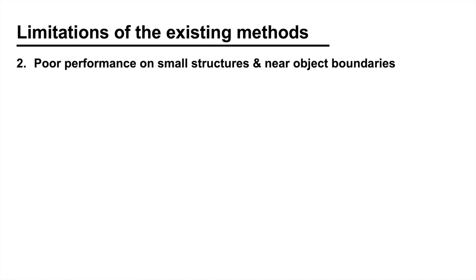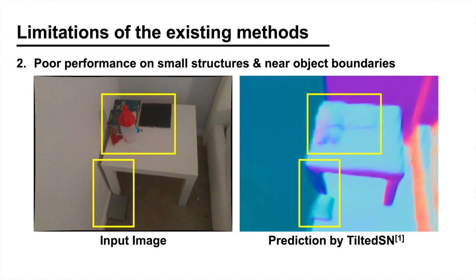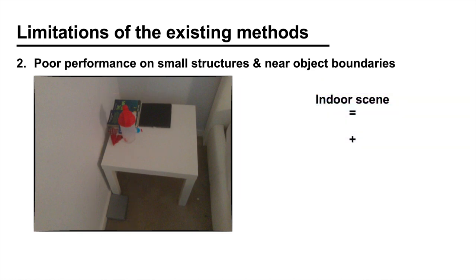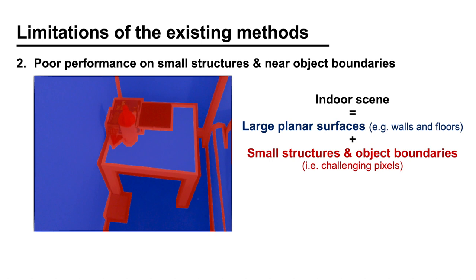Another limitation shared by the existing methods is the lack of detail in the prediction. When you look at a prediction made by a state-of-the-art method, you can see that the network fails to reconstruct small objects and that the object boundaries are not clear. This is mainly because there is a bias in training.